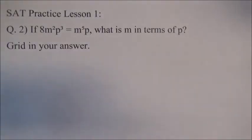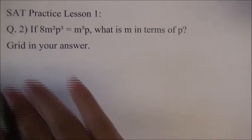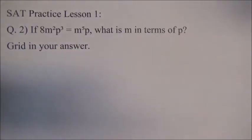So, now we have SAT Practice Lesson 1, question number 2. If 8M squared P cubed is equal to M to the 5th power P, what is M in terms of P? And then, there are no multiple choices. So, we have to solve this problem step by step.